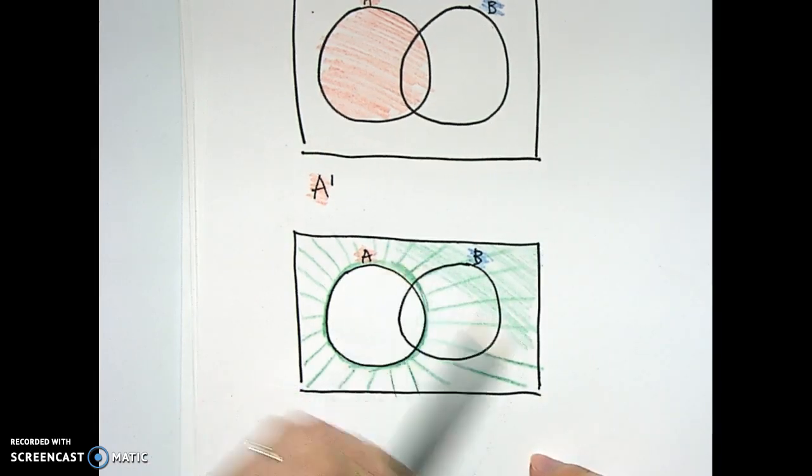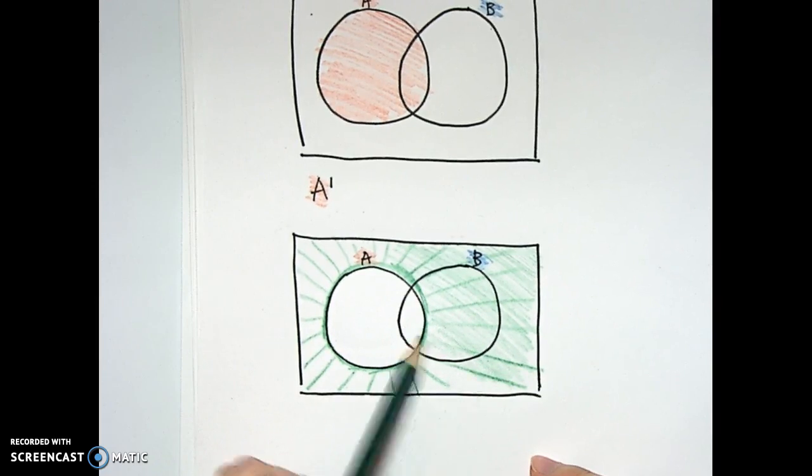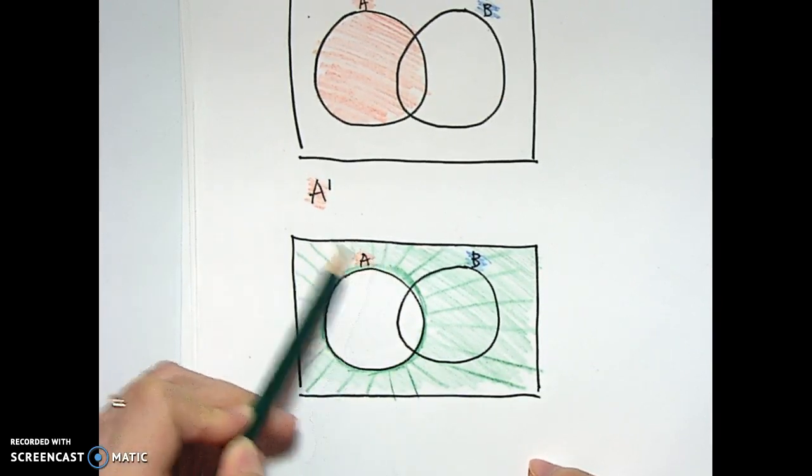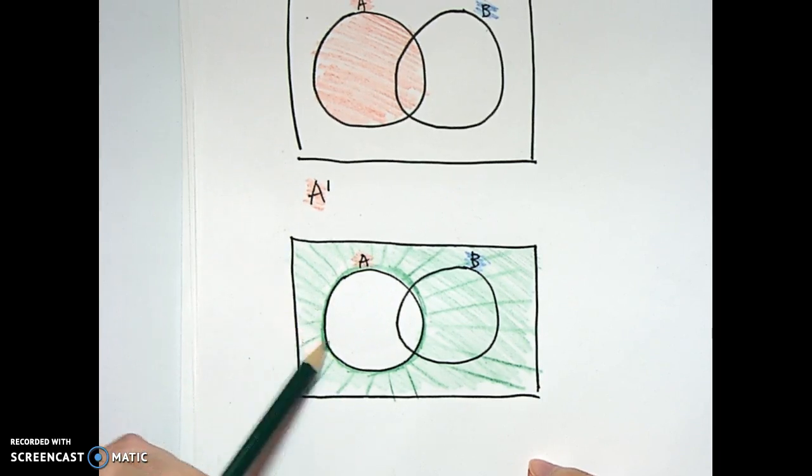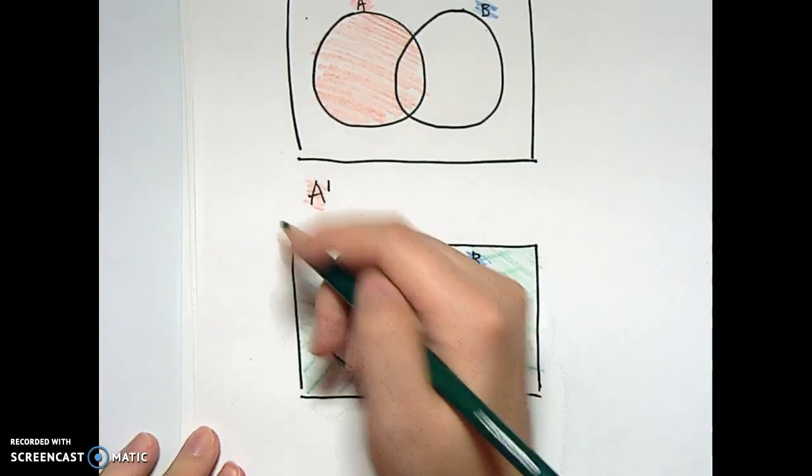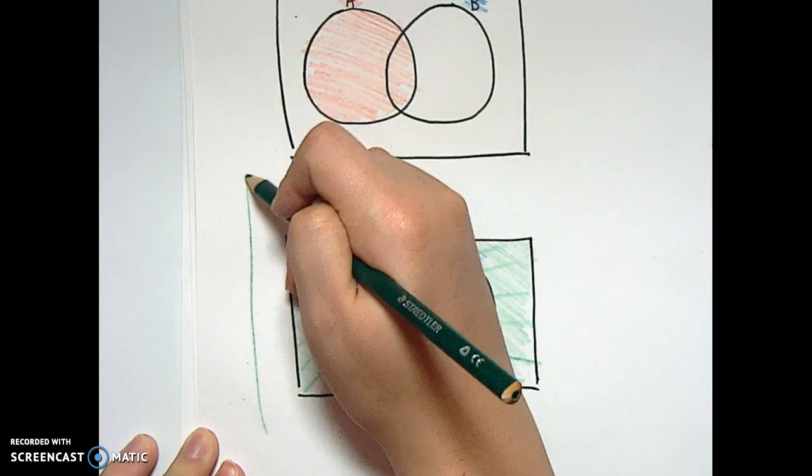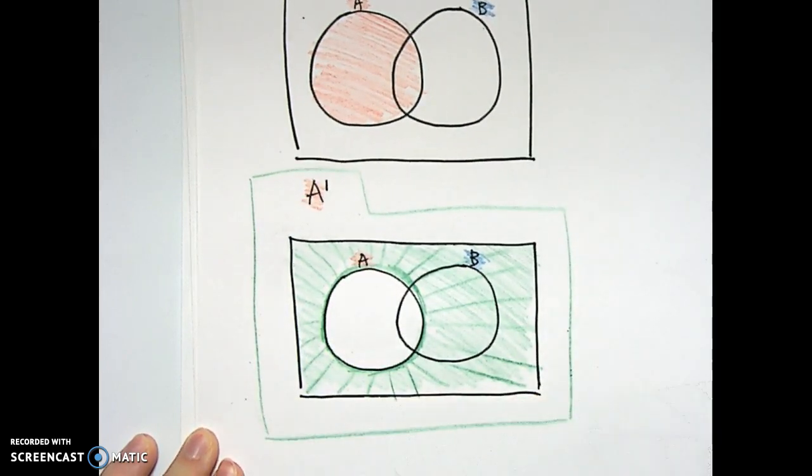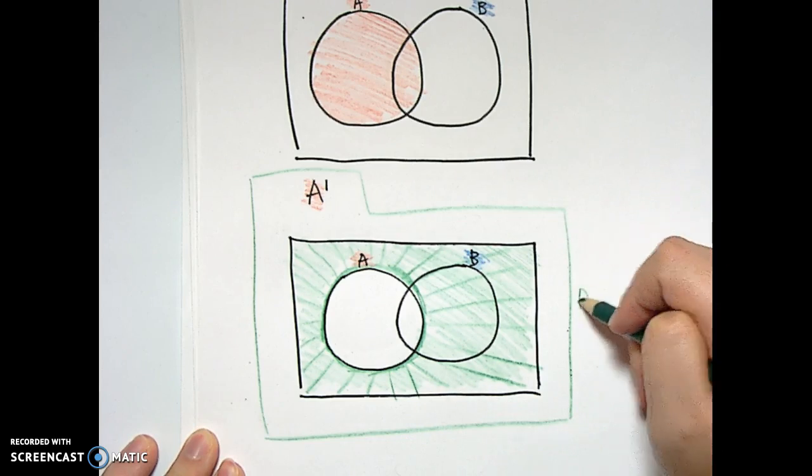So we're going to shade everything in because this line is a little big there. And then we're going to box the answer, as we always do, so Karen would know this is the answer.